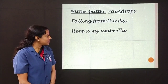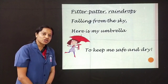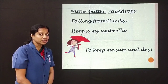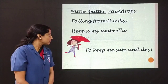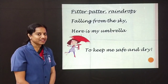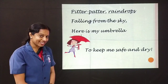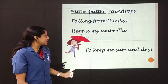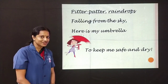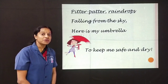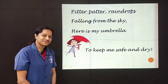Here is my umbrella to keep me safe and dry. So children, here she has got an umbrella to keep her safe and dry, to protect her from the rain. She is carrying a red colour umbrella. What colour was my umbrella? That was yellow colour. So she is carrying an umbrella to keep her safe. And how about you? You wear a raincoat so that you can protect yourself from getting wet in the rain.